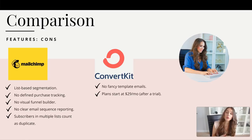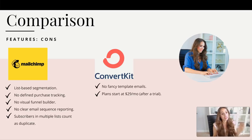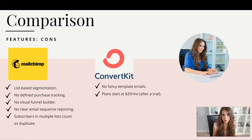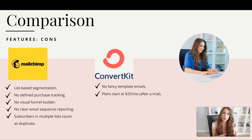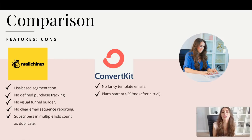Subscribers on multiple lists count as duplicates — and this is one thing that is super annoying about MailChimp. I literally chatted with them about this to make sure it was still an issue, and they confirmed yes, they still count subscribers subscribed to multiple lists as duplicates. So if you have three lists for three different lead magnets, people subscribed to more than one count as two subscribers — your subscriber count quickly adds up and your bill increases. There is a workaround using groups, but it's clunky and not as efficient as tagging.